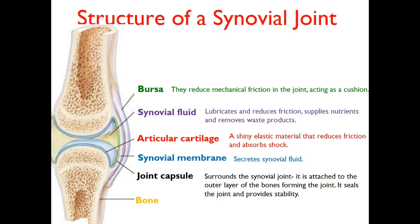The third characteristic is articular cartilage — a shiny elastic material that reduces friction and absorbs shock. If you are jumping, there's every chance your bones might move closer to each other as you land. The articular cartilage is what stops the bones from actually colliding or meeting each other. 'Articular' simply refers to where bones meet or articulate, so articular cartilage stops the bones from hitting each other by absorbing shock and reducing friction.